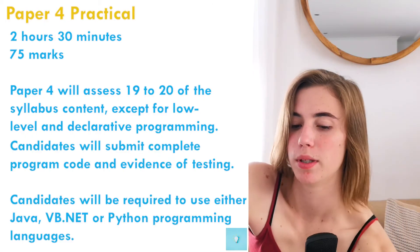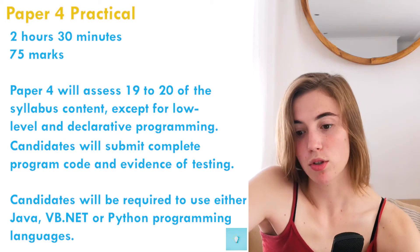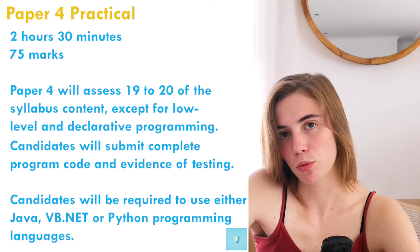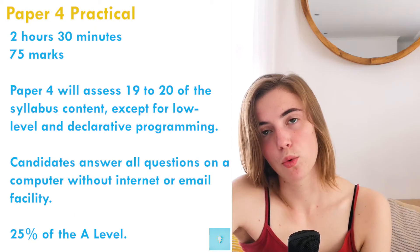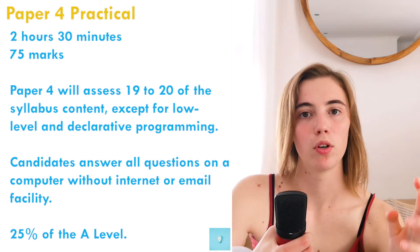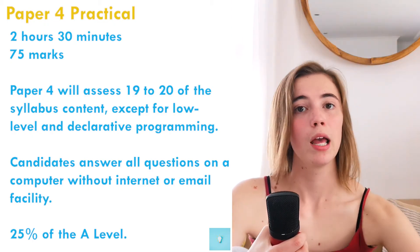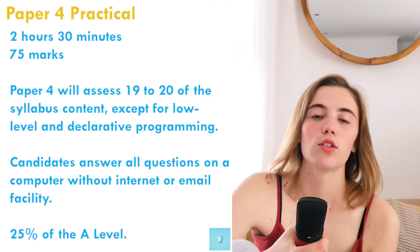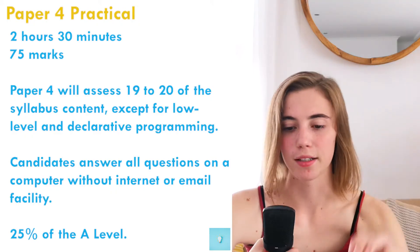Paper four is the practical programming paper: two and a half hours, 75 marks, assessing sections 19 to 20 excluding low-level and declarative programming. You must submit complete programming code and evidence of testing. You'll use Java, VB.NET, or Python, and answer all questions on a computer without internet or email access. Your code is marked on how well it runs and answers the given question. Paper four also counts for 25% of your A-level mark.